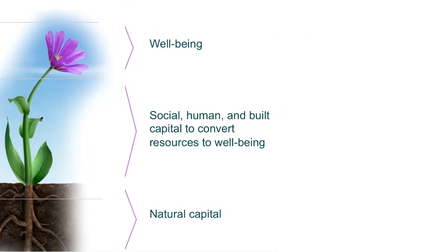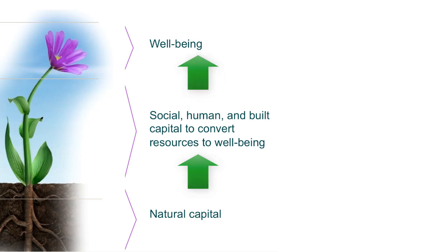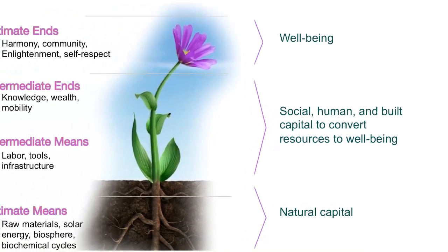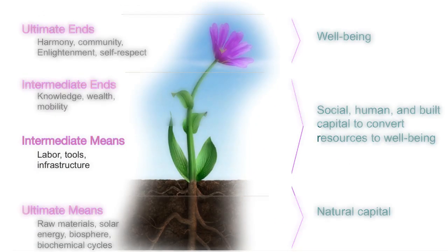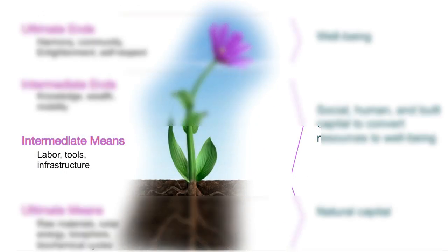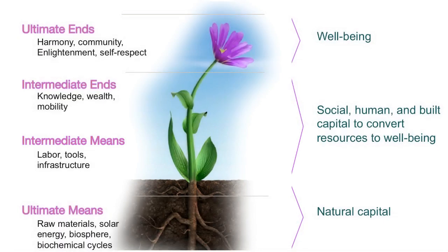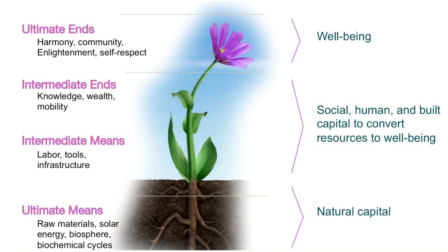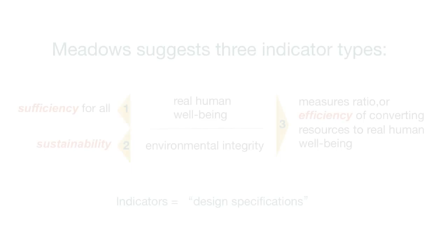These are the social, human, and built capital that convert resources to the ultimate ends. The intermediate means are labor, tools, and infrastructure. The intermediate ends are knowledge, wealth, and mobility. Meadows suggested that in order to monitor progress towards sustainable development, we would need at least three types of indicators.